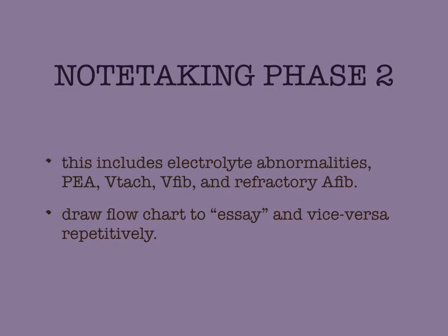Phase two of your note taking should include electrolyte abnormalities, PEA, VTAC, VFib, and refractory AFib. A good way of studying this is to draw the flow chart out from the book, then make your own essay about it, and then without looking at the book, draw a flow chart from your essay. Do that a couple of times — it is a really good way of reinforcing this material.